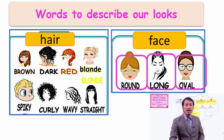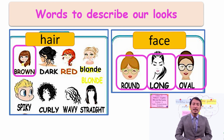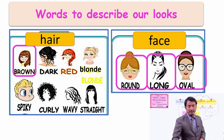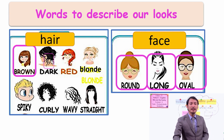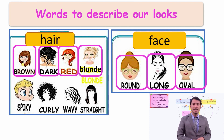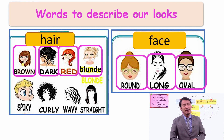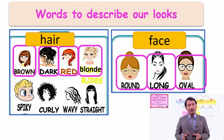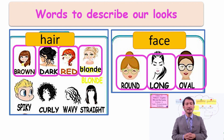Let's look at hair. You can see the girl has brown hair, another woman has dark and red hair, and blonde. Look at these different types of hair — according to the color you can say brown, dark, red, and blonde.